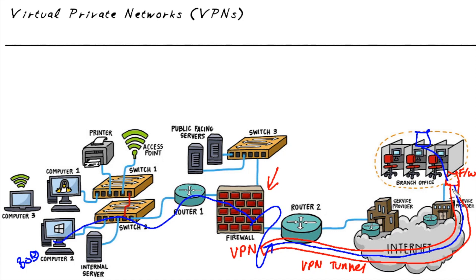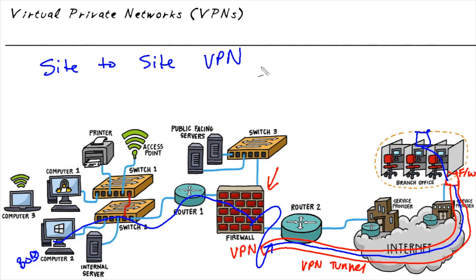This type of tunnel connecting our branch office site and our headquarter site has a special name: it's referred to as a site-to-site VPN. Whenever you hear that term, it means there are two devices — one at each end between two sites — that are encrypting and decrypting data so it can securely cross the network without being vulnerable to eavesdroppers.